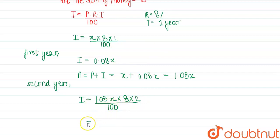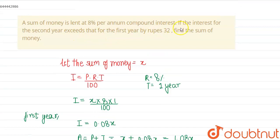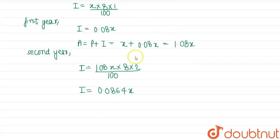So this will be 8×8 is 64... 8.64 divided by 100 is 0.0864x. This will be the interest for the second year. It is given to us that the interest for the second year exceeds the first year by rupees 32. So let this be I2 and this be I1. So I2 - I1 is given as 32.